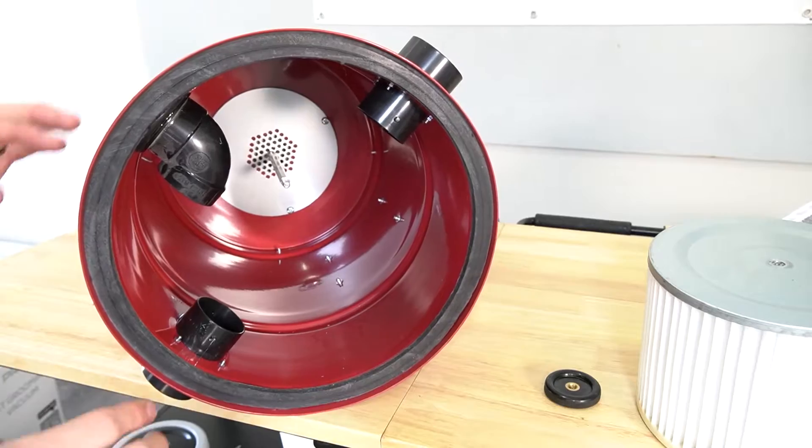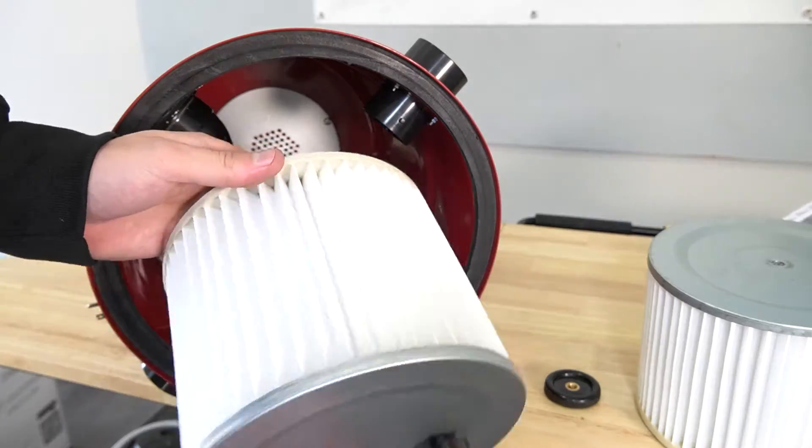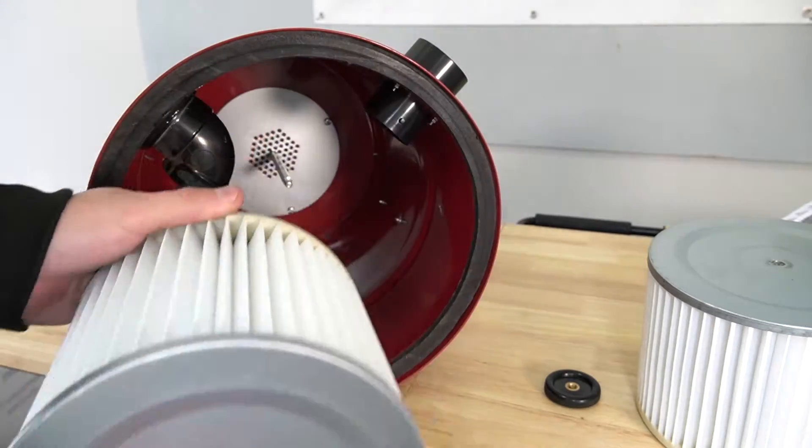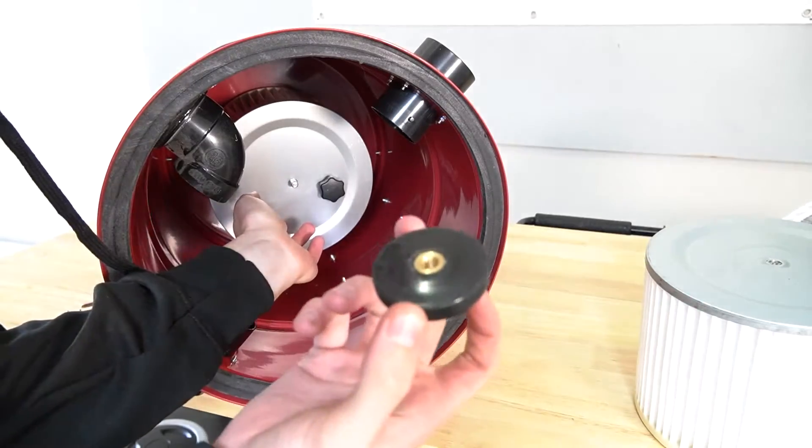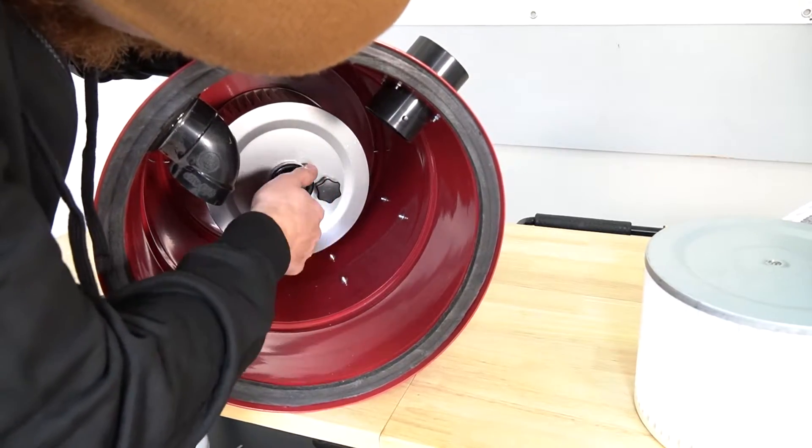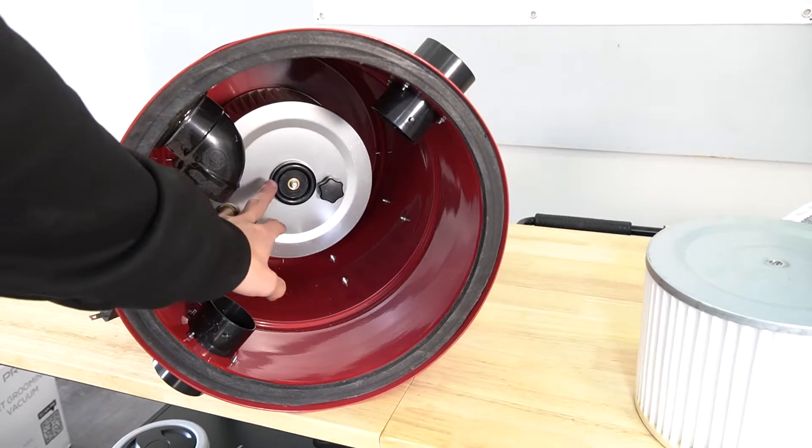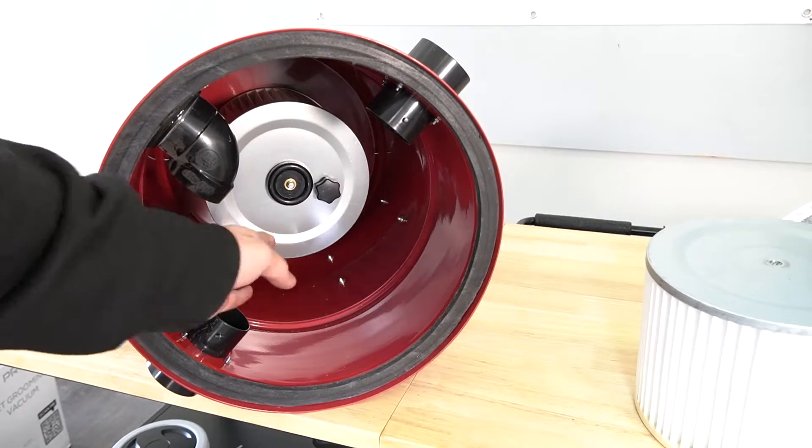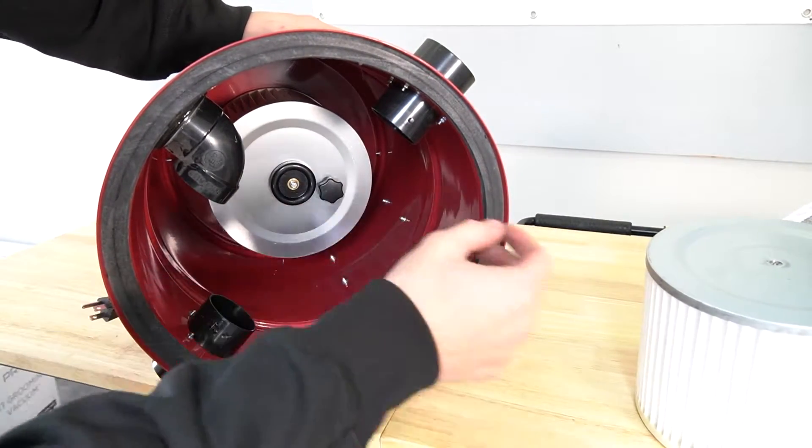Once you have the filters out, get your replacement. We're going to start with the HEPA filter. There's this hole - the motor shaft needs to go through this hole. Once you've got the filter in, grab the screw on nut. Once you have the nut on, give the filter a wiggle to make sure it's securely in place.